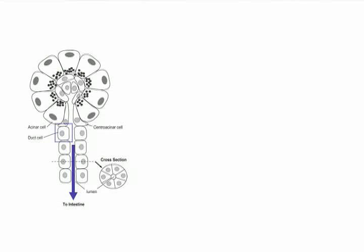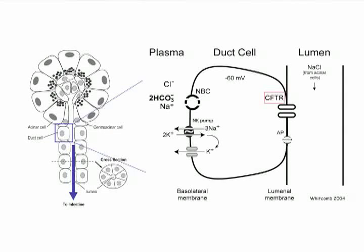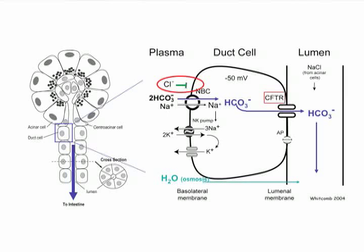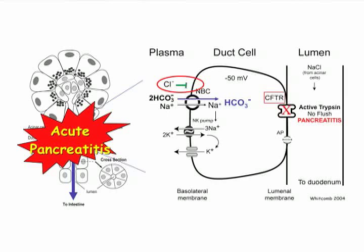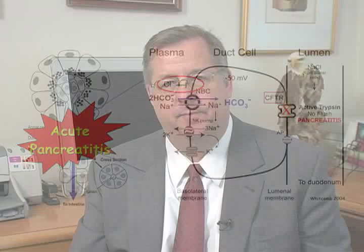As one can see from this diagram of a pancreatic duct cell, in the case of pancreatic secretion, chloride cannot get in on the basal lateral side, shown on the left, and if there is a bicarbonate-specific mutation in CFTR, bicarbonate cannot get out on the right side into the duct. So neither chloride nor bicarbonate can be transported across the duct cell and into the pancreatic duct. If there is no pancreatic fluid secretion, enzymes back up inside the pancreas and markedly increase the risk for premature trypsin activation, pancreatic injury, acute pancreatitis, and eventually chronic pancreatitis.